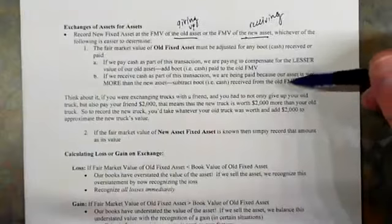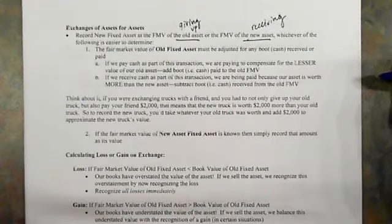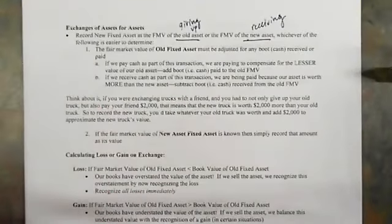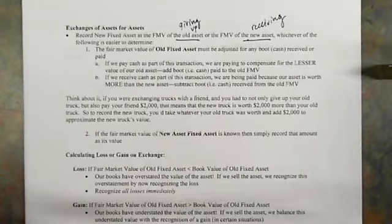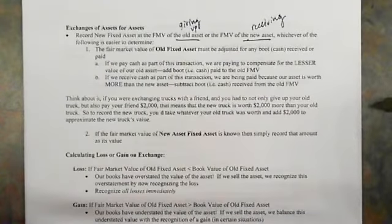If we receive cash, the opposite logic applies. If I give you my car and you give me your car plus $1,000 to make the transaction work, that means my car is worth more. To value what I've gotten, I would take the value of my old car and subtract $1,000. If we're going by the fair market value of the new fixed asset, we don't worry about what we've paid or received in cash — just record the exchange at the value of the new fixed asset.